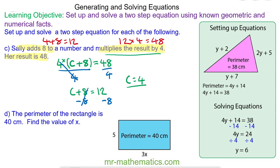Okay and finally for question D. The perimeter of a rectangle is 40 centimeters. Find the value of x. So the perimeter of a rectangle means the sum of the distance around the edge of the shape. So we know this length is 5 which means this length must also be 5. We know this length is 3x so this length will be the same.